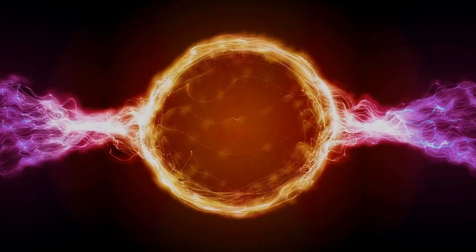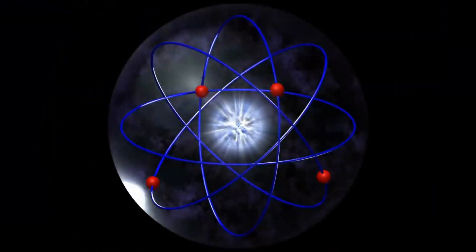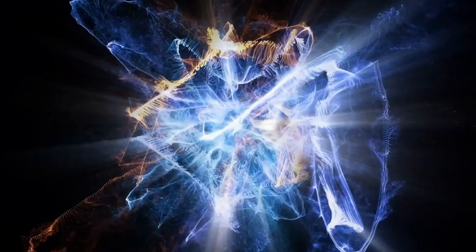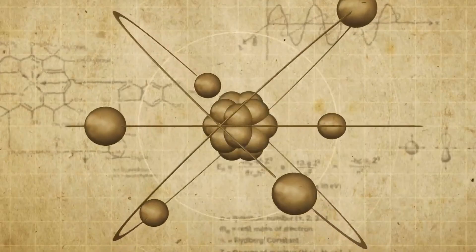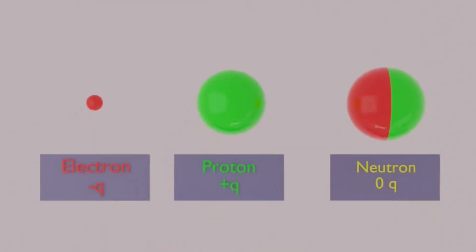To understand electricity, the first step is to comprehend that everything in the universe is made up of atoms, which consists of positively charged protons, neutrally charged neutrons and negatively charged electrons.